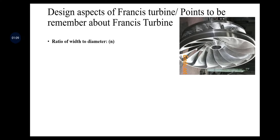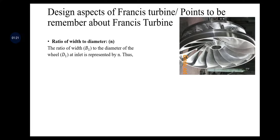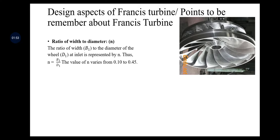The first parameter is the ratio of width to diameter, denoted by n. It is the ratio of width B1 to the inlet diameter D1. B1 represents the width at the inlet section and D1 is the inlet diameter — both related to the section through which water enters the runner through the vanes. Generally, the value of n ranges between 0.1 to 0.45.